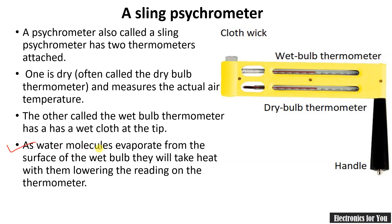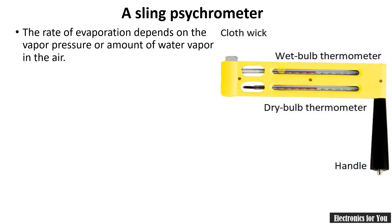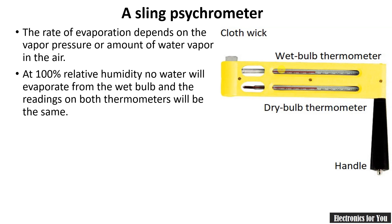As water molecules evaporate from the surface of the wet bulb, they take heat with them, lowering the reading on that thermometer. We wet the wet bulb thermometer, and its temperature starts dropping. The dry bulb thermometer will therefore show a higher temperature compared to the wet bulb. The rate of evaporation depends on the vapor pressure or the amount of water vapor in the air. At 100% relative humidity there will be no difference between the two thermometer readings, but most of the time there will be a difference, with the wet bulb showing a lower temperature than the dry bulb. A specific chart is used for measurement of relative humidity.